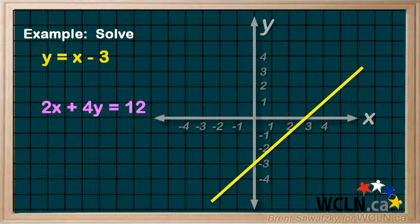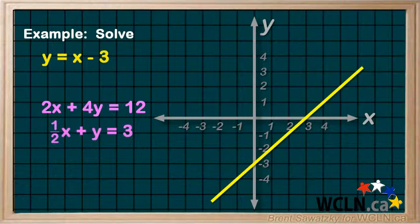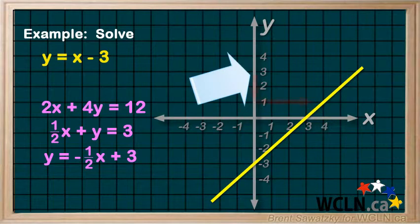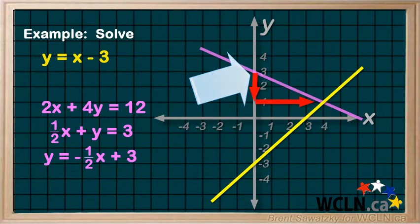The second one requires a bit of manipulation to get into our y equals mx plus b format. So, we divide and rearrange a little bit and we have y equals negative 1 half x plus 3. So, a y-intercept of 3 and a slope of negative 1 over 2. And so, we have that one.